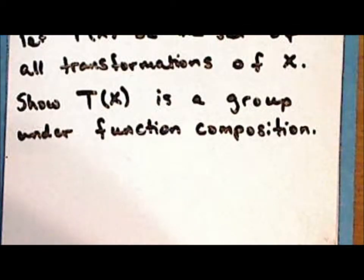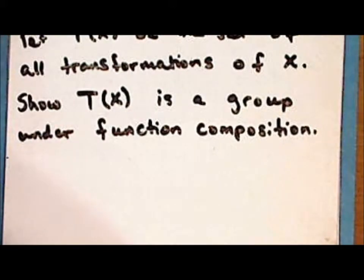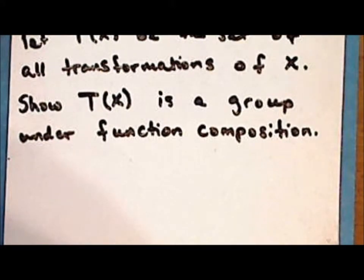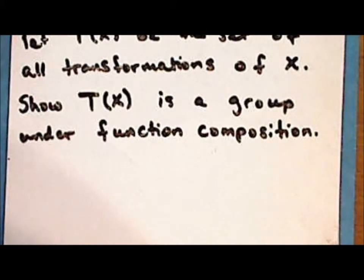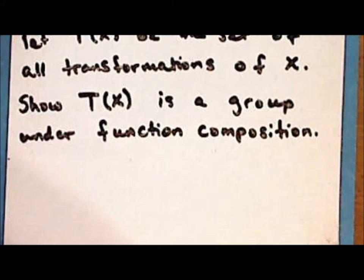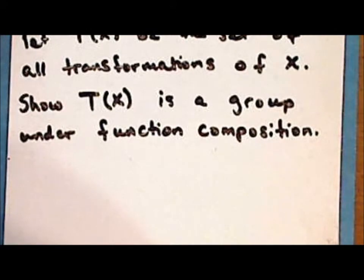We'll end here for today. Next time we will look at subgroups, and we'll continue to look at transformation and permutation groups. We'll also look at a real world application of group theory to chemistry. I will assume you've had a course in chemistry covering basic bonding theories, including especially valence shell electron pair repulsion theory. I hope you have enjoyed the third lecture. Thanks for watching.